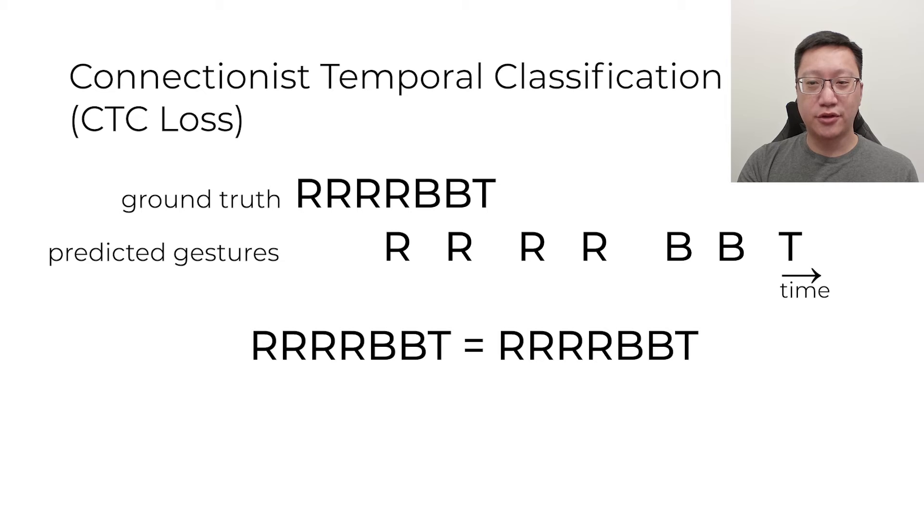CTC loss allows the model to learn the gesture alignment without the need for framewise ground truth labels. For example, if we have a gesture sequence right, right, right, right, backward, backward, tap, CTC will consider the prediction correct if the order of predicted outputs is also right, right, right, right, backward, backward, tap.